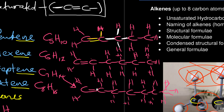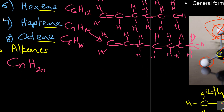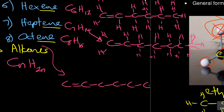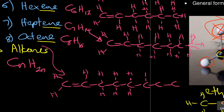Then heptene is 7 carbons — 1, 2, 3, 4, 5, 6, 7 — with the double bond in the first two, and you do the same: it takes 2 here, the last one takes 3 since it has a single bond, and the rest take 2. And then octene is 8 carbons — 1, 2, 3, 4, 5, 6, 7, 8 — then you fill up with hydrogens.